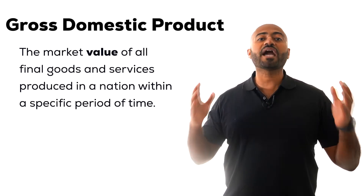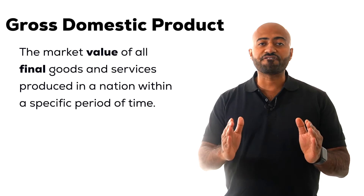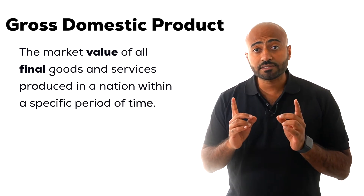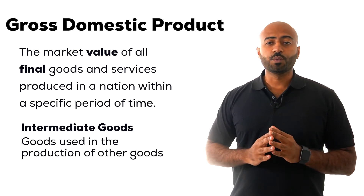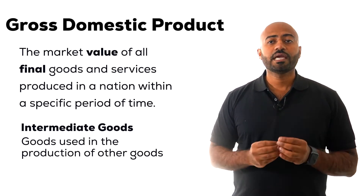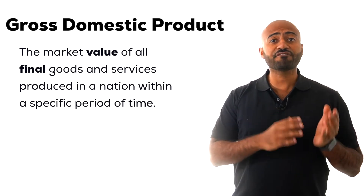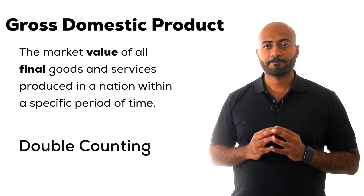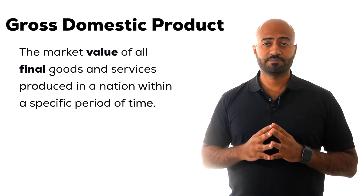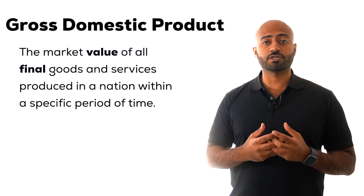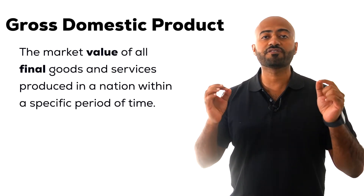Second, GDP counts final goods and services only. Final goods are goods sold to the final consumer, compared to intermediate goods, which are goods used in the production of other goods. We do not count intermediate goods because the value of the final good already includes the value of the intermediate good. Counting both would result in double-counting. For example, GMC buys four tires from Firestone to put on their truck to sell to you — those tires are intermediate goods, and their value is included in the truck's price.